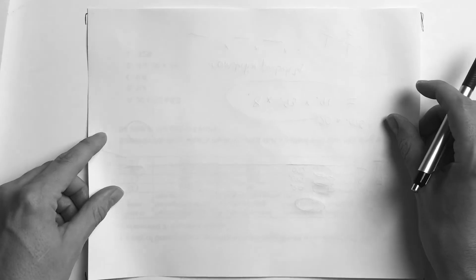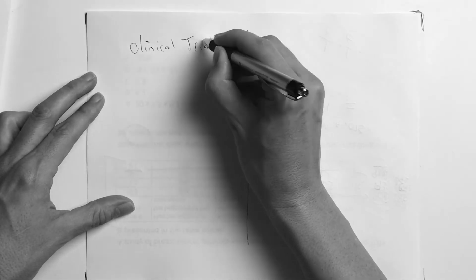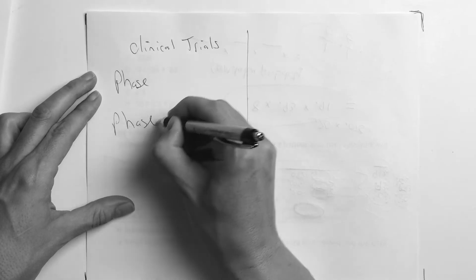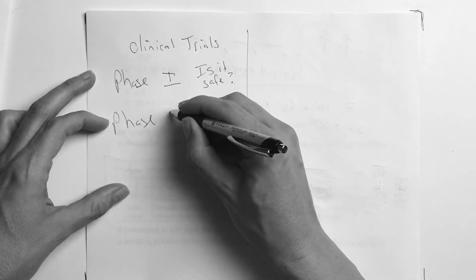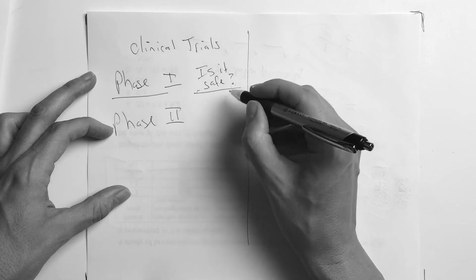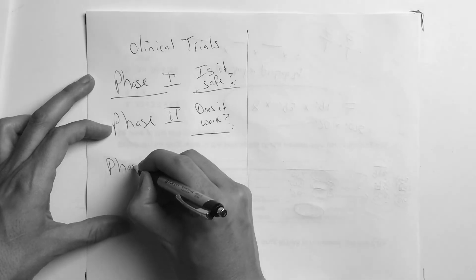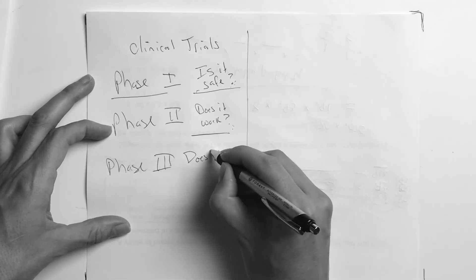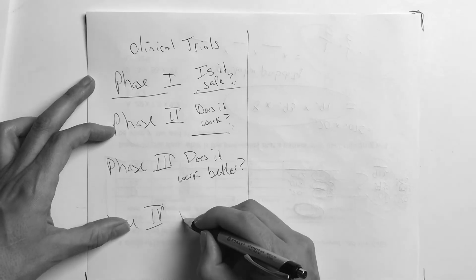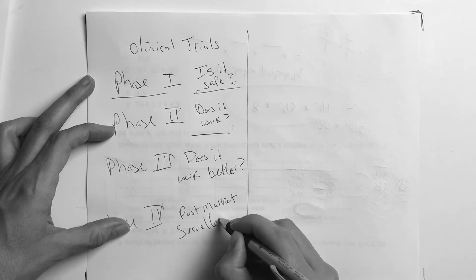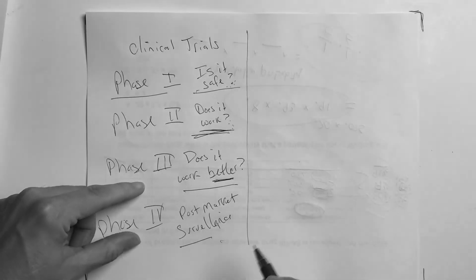Now for your homework — two things. First, understand clinical trials. There are four phases: Phase one asks 'Is it safe?' — a limited number of people are given the drug to make sure no one has a severe reaction. Phase two asks 'Does it work?' — we know people can tolerate it, but does it actually work? Phase three asks 'Does it work better?' — comparing it to existing treatments. Phase four is post-market surveillance — it's released and they collect real-world feedback. So: safe, does it work, does it work better, post-market.